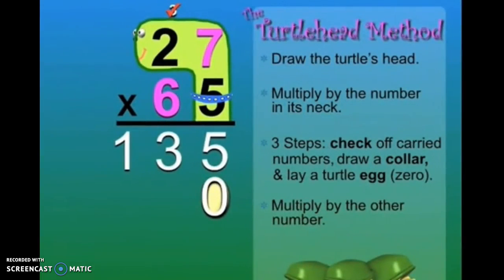Now we know that 7 times 6 and 6 times 7 equal 42. So we'll write the 2 and carry the 4 to the next column. 6 times 2 equals 12 plus 4 equals 16.